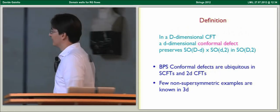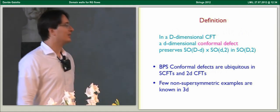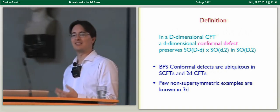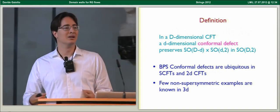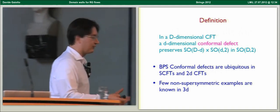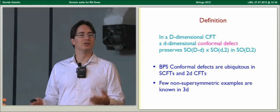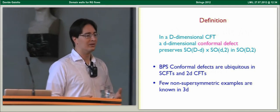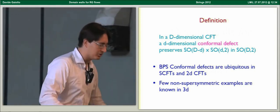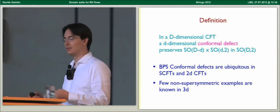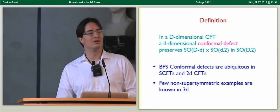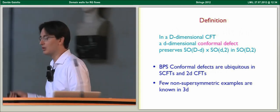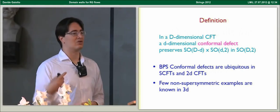I should start with reviewing a definition. A conformal defect in a conformal field theory is an extended defect which preserves as much conformal symmetry as you could reasonably expect. For example, a conformal boundary condition in a four-dimensional conformal field theory is a boundary condition which preserves all conformal transformations with a fixed boundary — that subgroup being the conformal transformations in three dimensions. For a d-dimensional defect, you can hope to preserve the d-dimensional conformal group together, possibly with rotations around the defect.